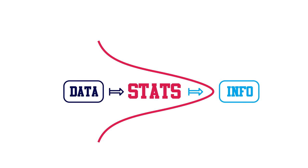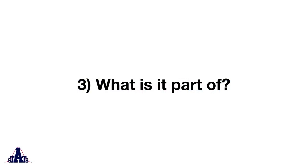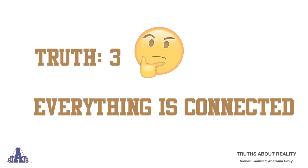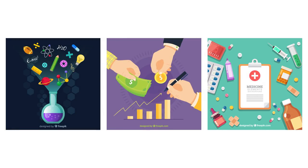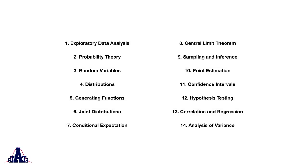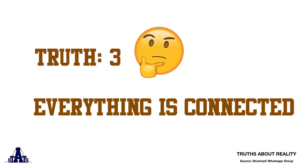The next question is: what is it part of? This comes back to truth number three — everything is connected. Every major field of study that uses empirical evidence needs to rely on stats, whether it's science, finance, or medicine. So now we can ask: what is stats made out of? This is where students sometimes get confused or disheartened, because there are a whole bunch of abstract mathematical things needed to handle stats. But remember — everything is connected. Let's see how these chapters are actually connected to one another, which gives you a much better picture of what stats is.